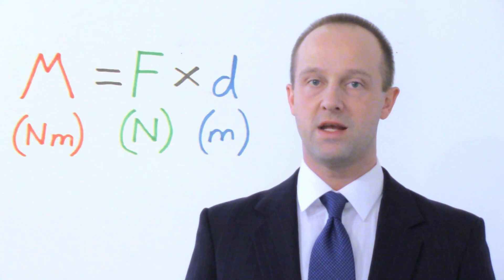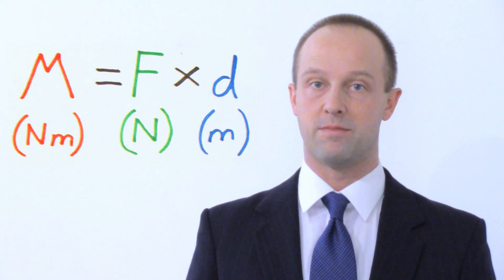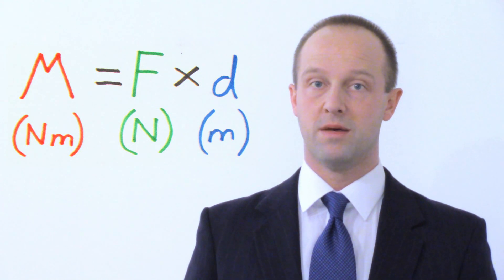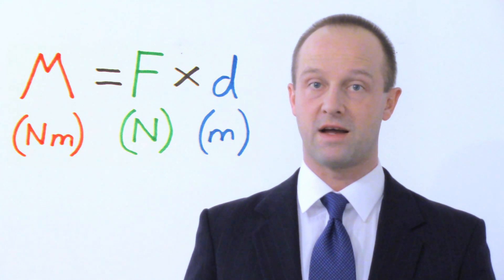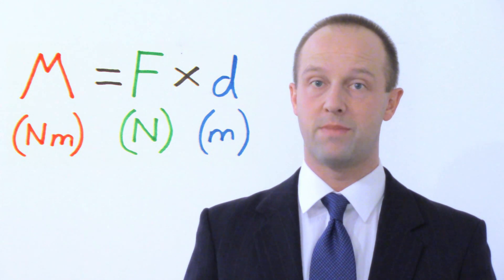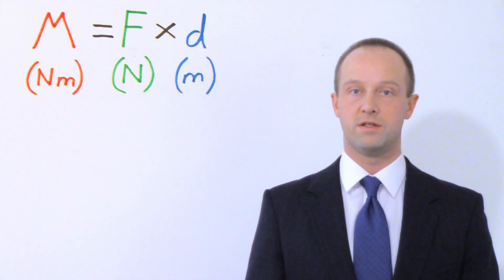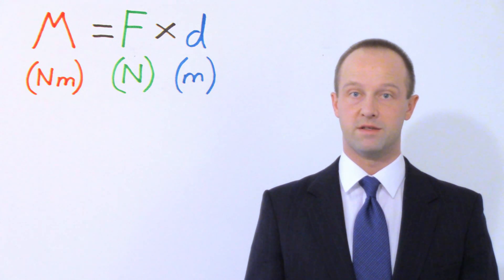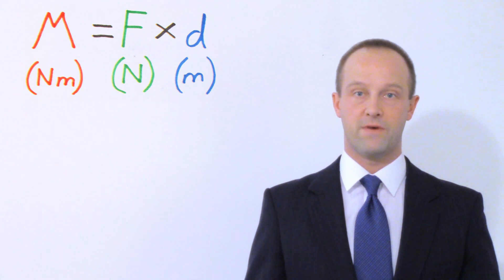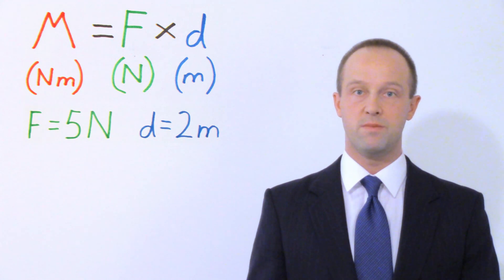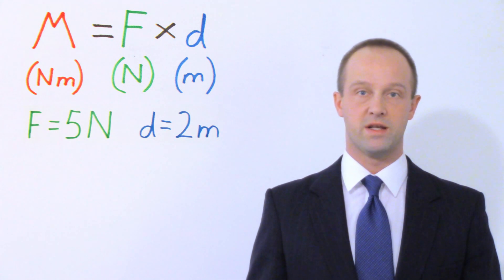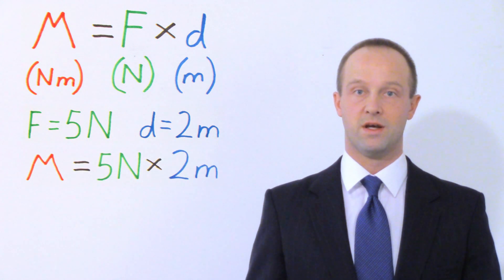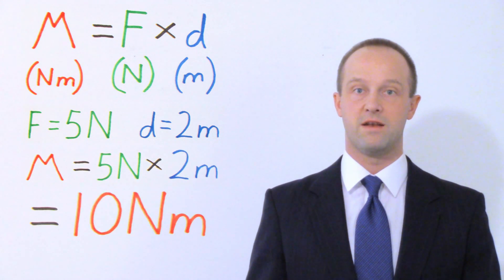We use the equation M equals F times D to give us the size of a moment. That means M for the moment equals the force in newtons multiplied by the distance that force is applied on the lever — the distance from the pivot. Because force is measured in newtons and distance is measured in meters, the units of moments are newton meters. So if we have a force of five newtons applied two meters from a pivot, the moment is five newtons multiplied by two meters, which gives us a moment of 10 newton meters.